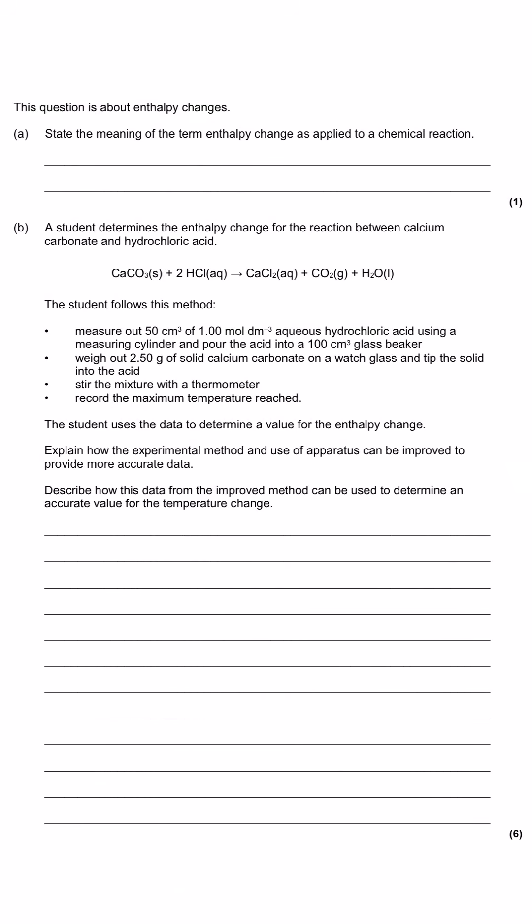We're going to look at a 13 mark question here that ranges through a few of the different ways that you can explore calorimetry, but before we start on the calorimetry the first question asks us to state the meaning of the term enthalpy change as applied to a chemical reaction. So we're just defining a general enthalpy change not a particular enthalpy change, and so enthalpy change generally is the heat energy change at constant pressure.